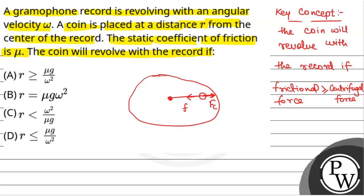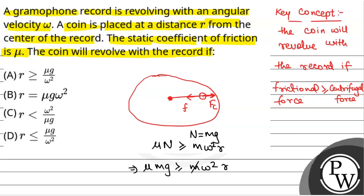The centrifugal force will be outward. Till the time when centrifugal force is less than or equal to frictional force, the coin will revolve with the record. Frictional force equals mu times N, and N equals mg. So mu times mg must be greater than or equal to m omega squared r. Cancelling m, we get r is less than or equal to mu g divided by omega squared.